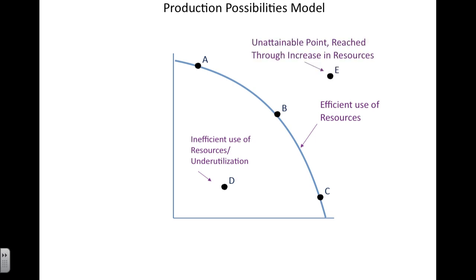There are also points outside the curve. Those points represent currently unattainable points that one day, through growth, resources, and technology, we may be able to reach, but at this current juncture we cannot.